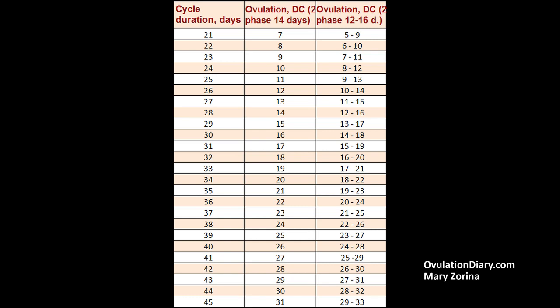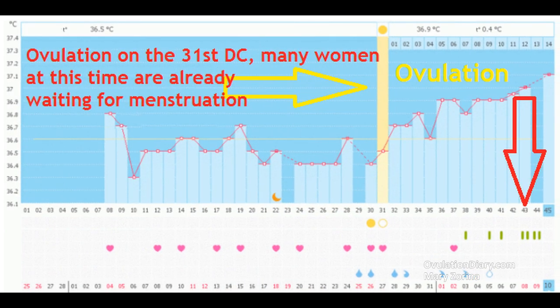If ovulation occurred on the 24th D.C., add your length of the second phase, or just 14 days, and you will get the length of your cycle — for example, 38 D.C. A common mistake is that when you think menstruation should already start, the second phase is still ongoing. That is why everyone planning for a baby with an unstable, long cycle should always calculate the date of ovulation. For non-planners, this information will also be useful to dismiss excessive worries.